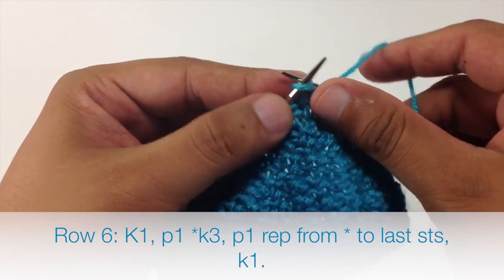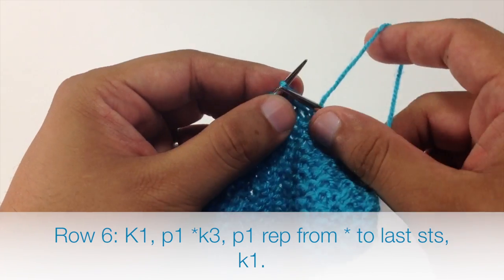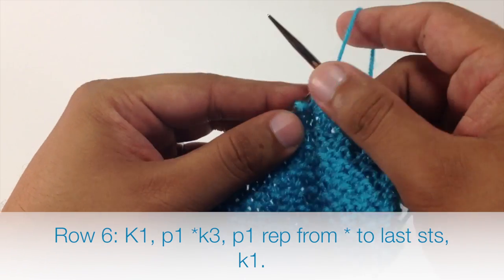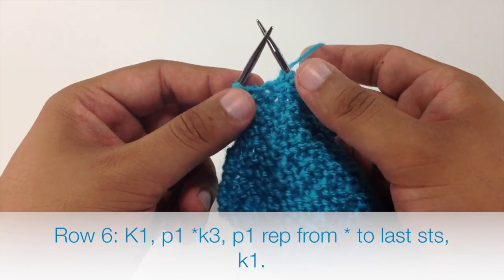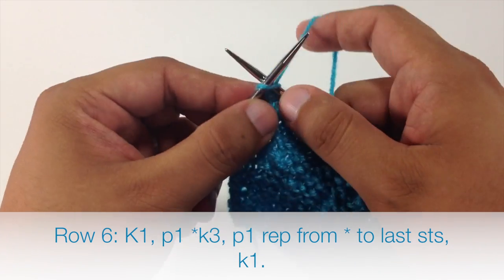So we will continue knitting 3 and purling 1 until we reach the last stitch in the row. And when we reach the last stitch in the row we are going to knit 1.